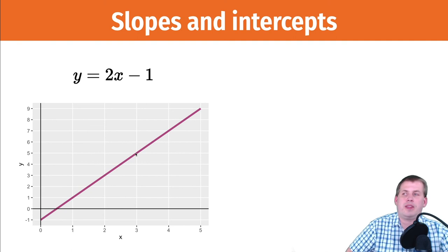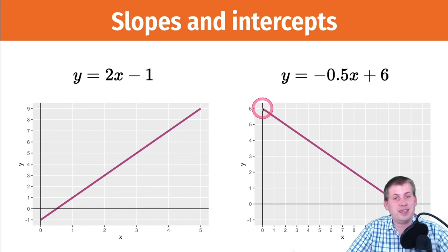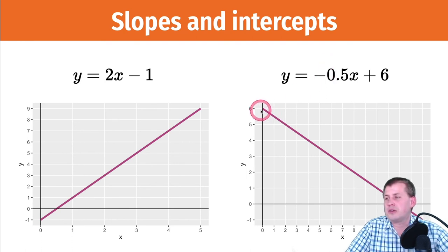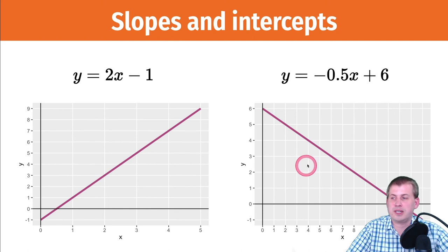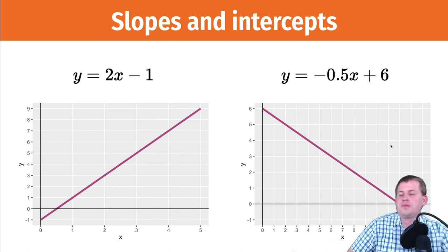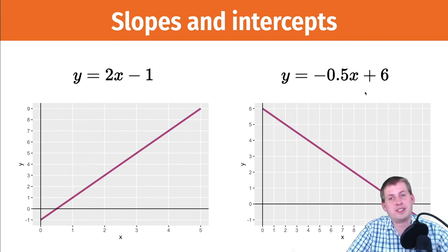Another example: b equals six, so the line starts at six at the y-intercept. A slope of negative 0.5 means negative one over two — so it goes down one over two, down one over two. That's a slope heading downwards. You can describe any line using a slope and a y-intercept.